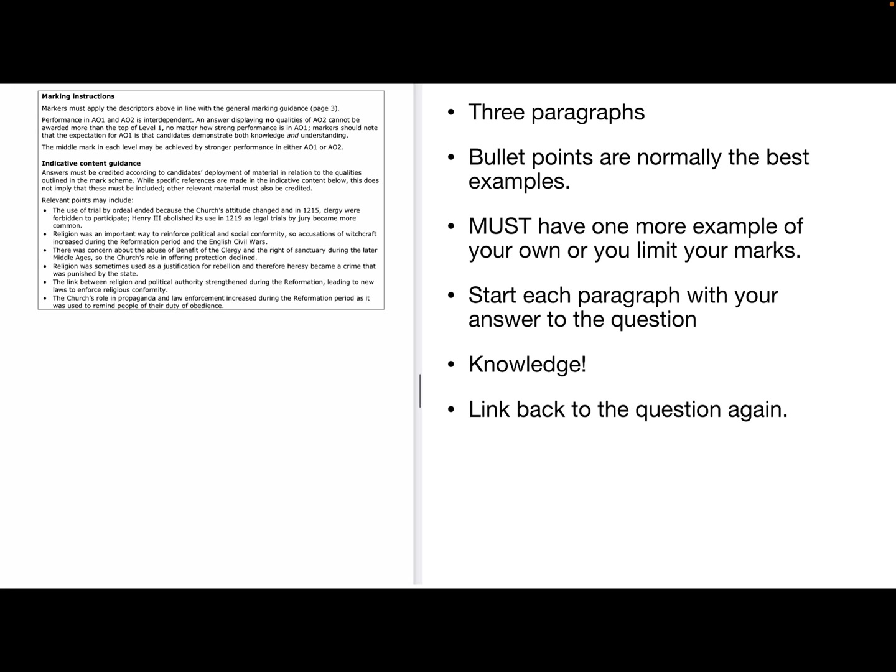Link between religion and political authority strengthened during the reformation leading to new laws to enforce religious conformity. So in other words, you're going to follow that religion of the king or queen and the church's role in propaganda and law enforcement increased during the reformation period as it's used to remind people of their duty of obedience. So this one was quite a difficult question. But I think things like God being the judge and then kind of changing it to trials by jury removes that element of the church being involved in that law and order and makes it more of a state crime. And people could link that with Henry VIII later on in saying that obviously he takes over the Church of England so all crimes become state crimes now. So remember, start each paragraph with your answer to the question. So start with one of those kind of points that you can see in the mark scheme there, then select the specific knowledge that proves that and link that back to how that proves it in those paragraphs. No introduction, no conclusion. Each paragraph is really focused on how it answers the question.